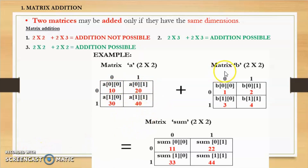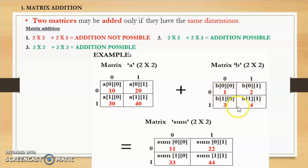Next, consider matrix B also with two rows and two columns, with a zeroth row, first row, zeroth column, and first column. The elements inserted are 1, 2, 3, and 4 — stored at b[0][0], b[0][1], b[1][0], and b[1][1] respectively.